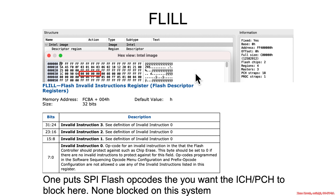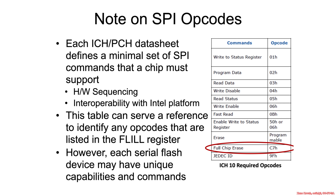Next in the component section, at flash component base address plus four, is the invalid instructions register. You can see this is set to all zeros, so there are no invalid instructions it wants to prevent from being sent. One thing you might imagine this being used for is blocking potentially dangerous things that might accidentally get sent, like a full chip erase flash opcode — so if someone uses software sequencing to pass through a full chip erase, you can block that in hardware.